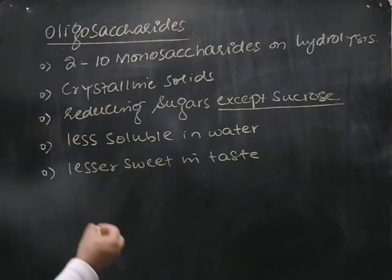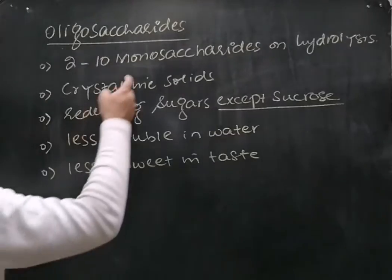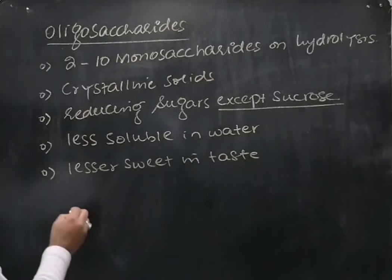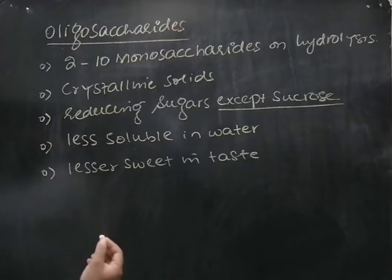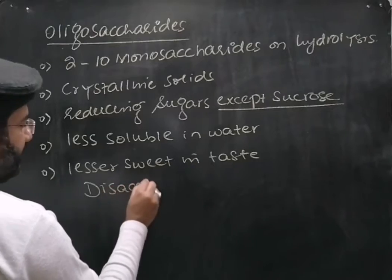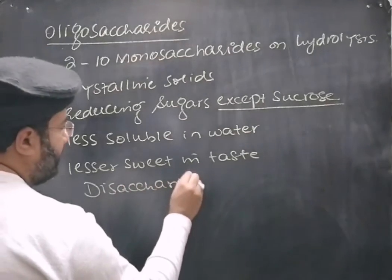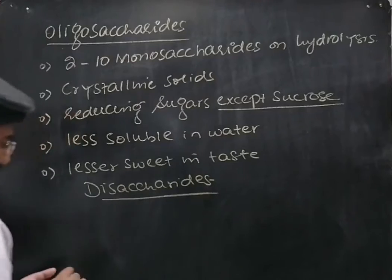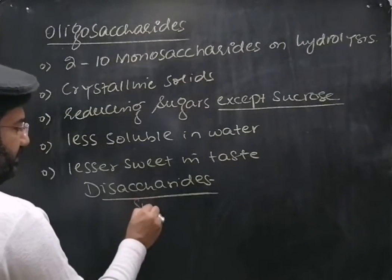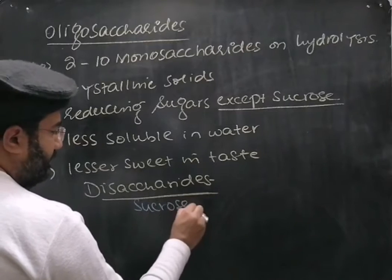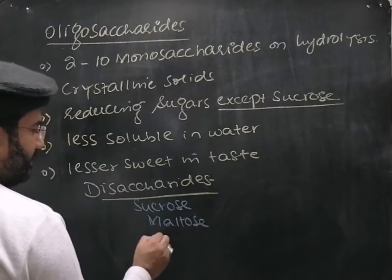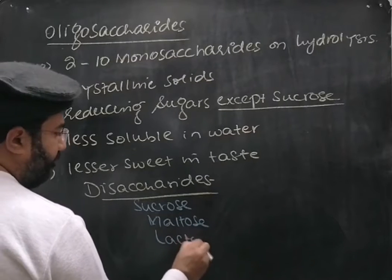The oligosaccharides, on the basis of the number of monosaccharides they yield on hydrolysis, can be classified into disaccharides, trisaccharides, etc. But the most important of the oligosaccharides are the disaccharides, and among disaccharides, there are three examples that are commonly quoted.